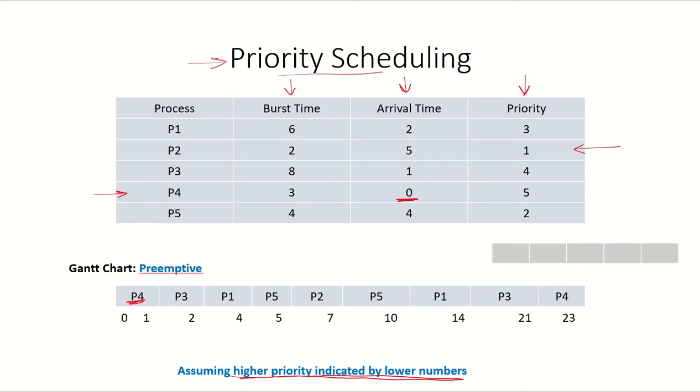At time 1, P3 arrives in the system. Now the priority of P3 which is 4 will be compared to the priority of the running process P4 which is 5. So we see that P3 has a higher priority.